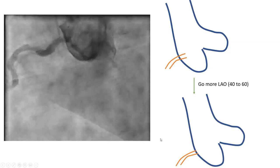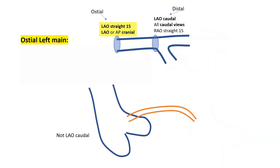We need to know what standard angles to use for the right coronary, left coronary, and grafts, and how to adjust the angles to obtain the perfect view, both for stenting and for assessing angiographic severity. For osteo-left main, the best view is usually LAO cranial — typically LAO 30, cranial 20 to 30. LAO straight, which is the view we use to engage the left main, is also a good view. AP cranial can also be good. So remember: LAO cranial, LAO straight, and AP cranial.